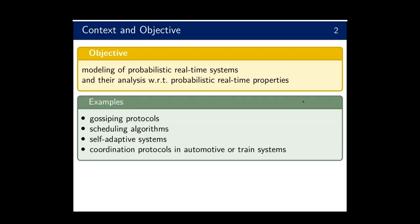Why are we interested in that? Because there are many examples of such probabilistic real-time systems, such as gossiping protocols. We'll consider a small example in this talk, but also scheduling algorithms where processes execute tasks in real time that could fail, self-adaptive systems where components can fail and need repair in real-time, and coordination protocols in automotive or train systems.